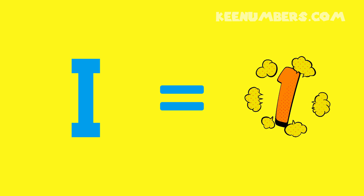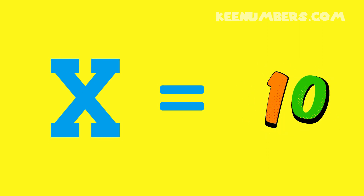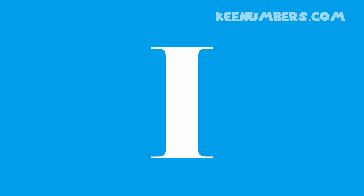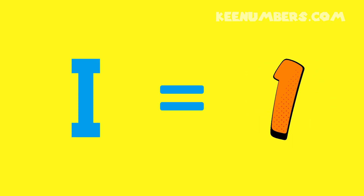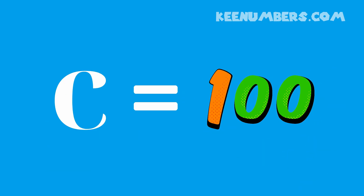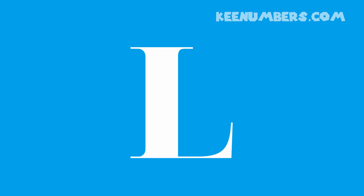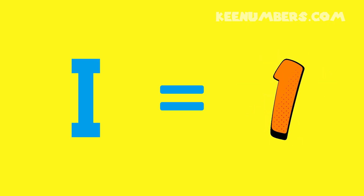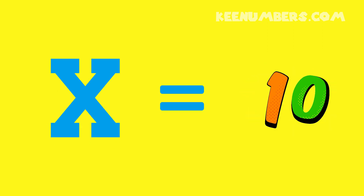I means one. V means five. X means ten. L means 50. C is 100. M is 1,000. Those are our key Roman numeral symbols.